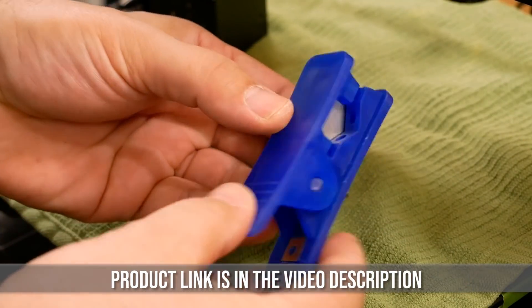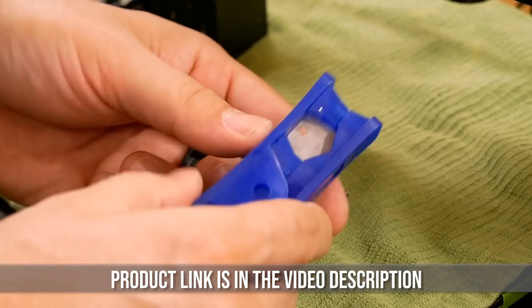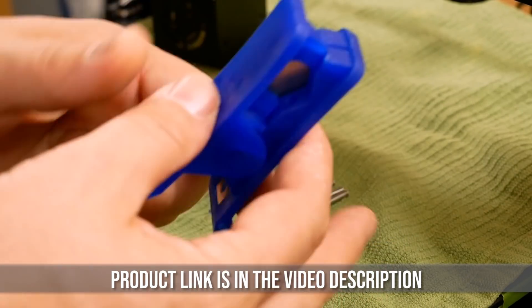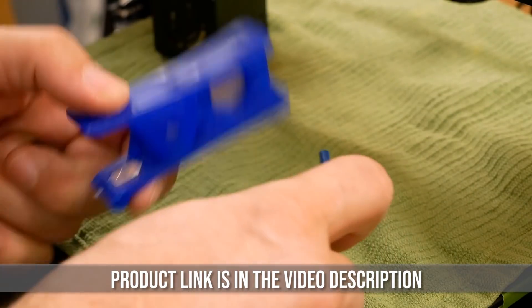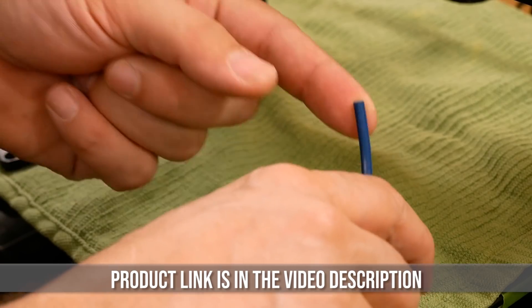It also comes with this cutter. It's very important that when you cut the tubing it be completely perpendicular and straight. So you are not going to want to use like a set of diagonal cutters to do this, it'll crush it.